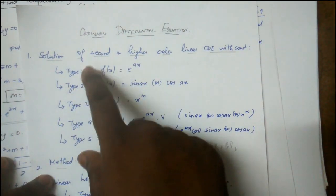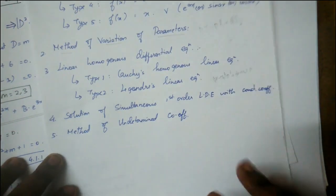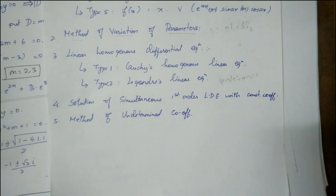Starting from Type 1: when f(x) = e^(ax), use undetermined coefficients. This will definitely be useful.